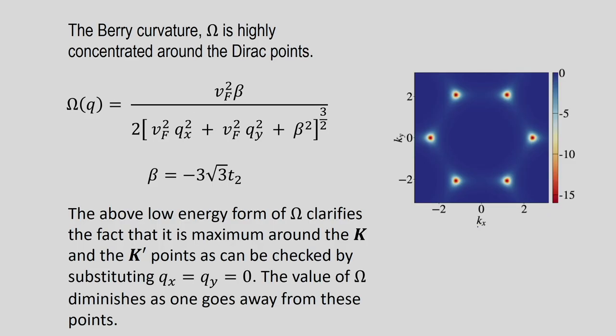This is how the inner product is calculated, appearing in the expression for the Berry curvature. Once one does that, one gets a Berry curvature which is plotted in the kx-ky plane. One can clearly see the six Dirac points on the panel, and the Berry curvature has maximum weight at these points — the red color indicates a large negative value — and as you move away from those Dirac points the magnitude diminishes to zero.